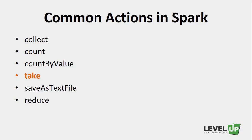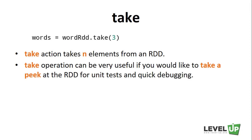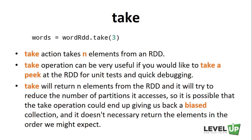Next, we talk about the take action. Take returns N elements from an RDD — very useful for peeking at an RDD for unit tests and quick debugging. You can take the first three rows and print them to the console. Keep in mind that take tries to reduce the number of partitions it accesses, so it may return a biased collection and doesn't necessarily return elements in the expected order.